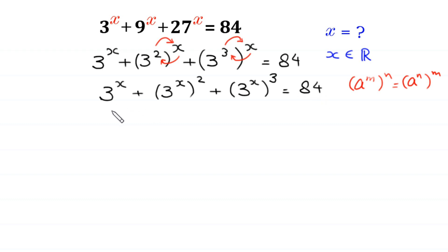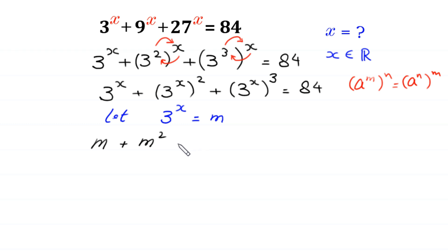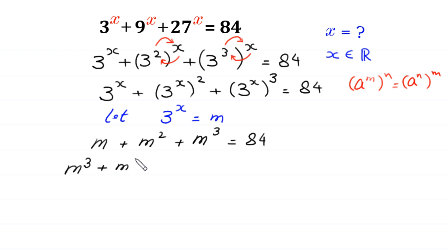Now we suppose that 3 to the power x is equal to m, and substitute m into the equation. The equation becomes m plus m squared plus m cubed equals 84. We rearrange the terms as m cubed plus m squared plus m equals 84, and we split 84 as 64 plus 16 plus 4.